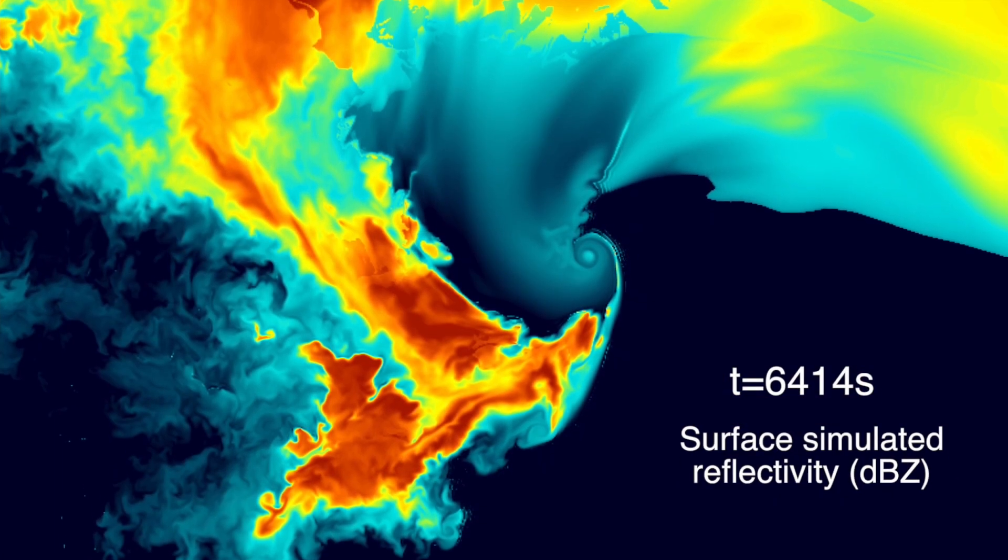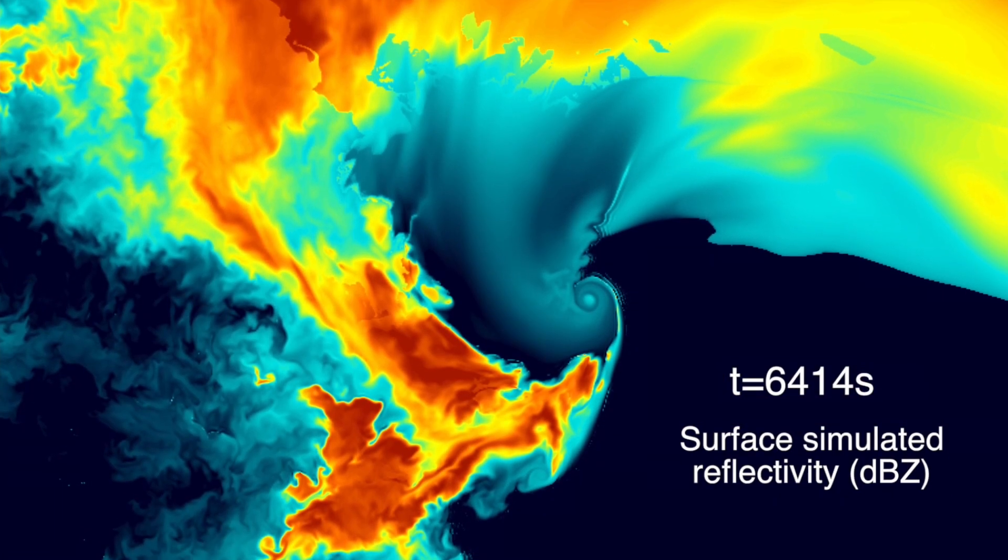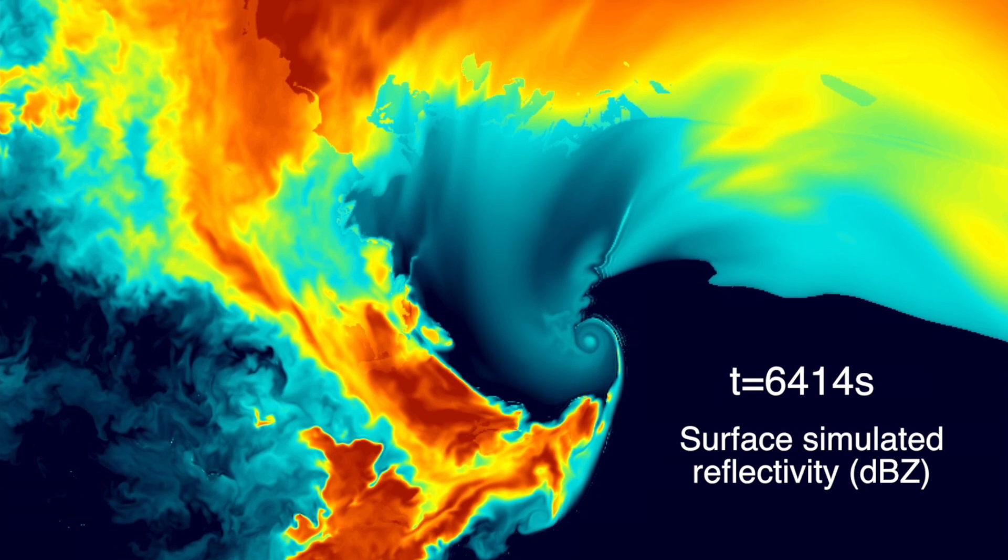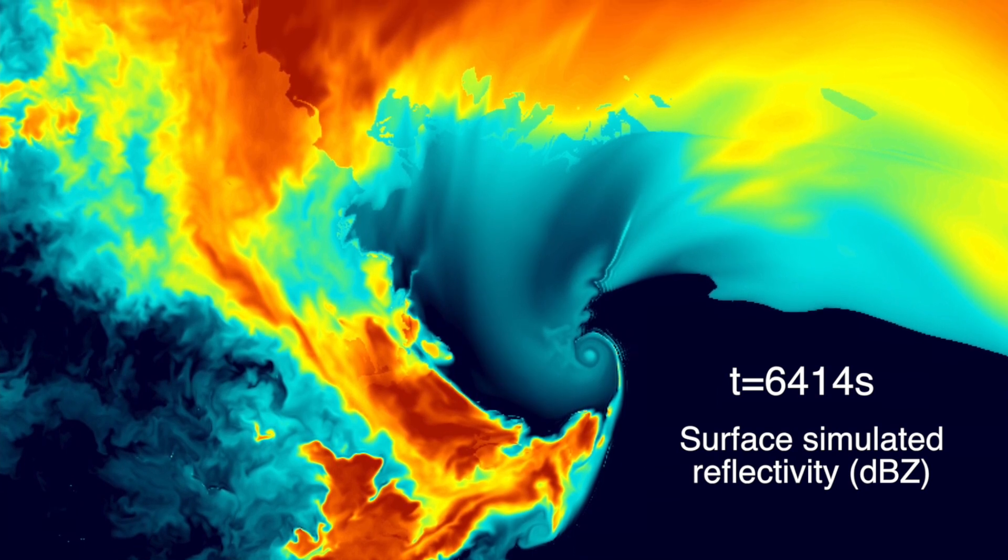This is radar reflectivity. Here's our tornado right here. This is a view that meteorologists are used to. Some interesting things are going on here and here.